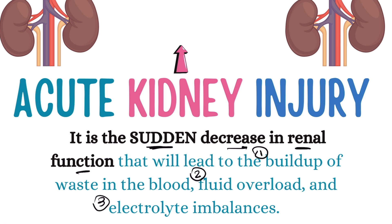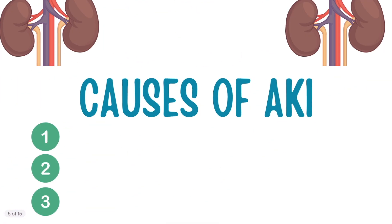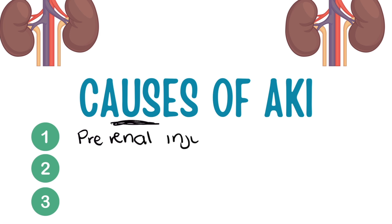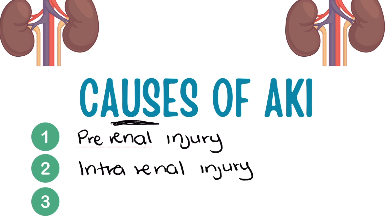Remember, acute kidney injury is reversible. This means that once the problem is solved and it ends in recovery, this is reversible. But chronic kidney disease is not reversible. What are the causes of AKI? There are three major causes that we need to remember: the first one is pre-renal injury, the second one is intra-renal injury, and lastly, we have post-renal injury.